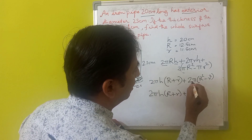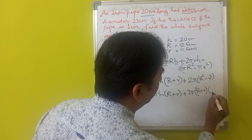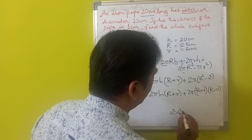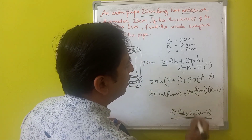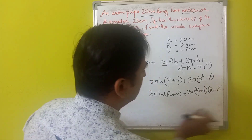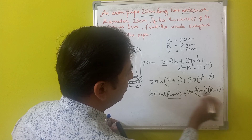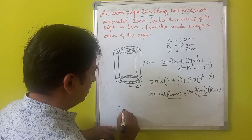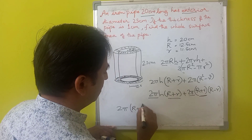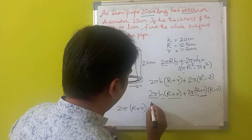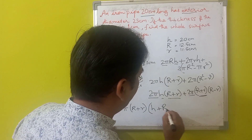We can further simplify using the identity a² − b² = (a + b)(a − b), so π(R² − r²) = π(R + r)(R − r). Since (R + r) is common in both terms, we factor it out: Total surface area = 2π(R + r)[h + (R − r)].